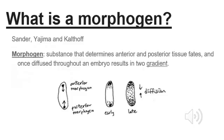Studies done by Sander, Yajima, and Kaltoff provided evidence of a patterning mechanism in Drosophila embryos. It was concluded that the anterior portion of the embryo only gave rise to anterior structures, while the posterior portion only gave rise to posterior structures, and not vice versa. With this finding, Sander concluded the presence of morphogens. Morphogens are substances that specify the tissue fates of the posterior and anterior portions.